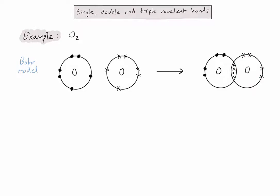So by sharing two pairs of electrons, each oxygen atom has now gained a full outer shell. And again it's more useful in IB chemistry to represent these as a Lewis diagram, not a Bohr model. So let's do that.